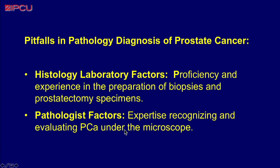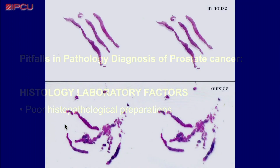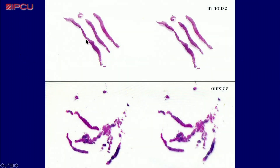However, it's not only a pathology factor. The histology laboratory has a very important role, and we need to have very competent and well-trained technical personnel to avoid poor histological preparations. These are examples of our biopsies. We try not to put more than three biopsies in one slide, and in cases where they come from different sources, they are colored with ink to distinguish the locations.